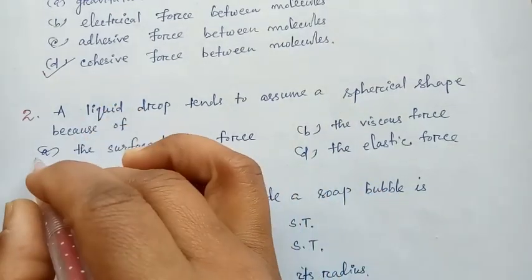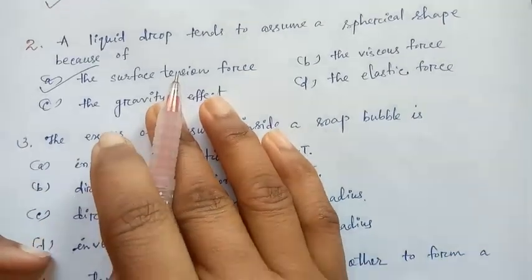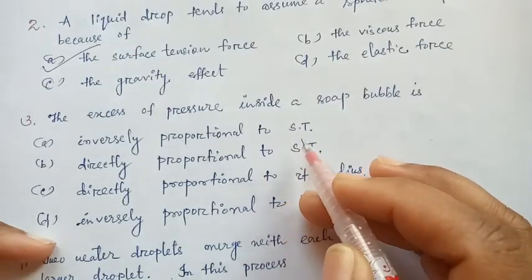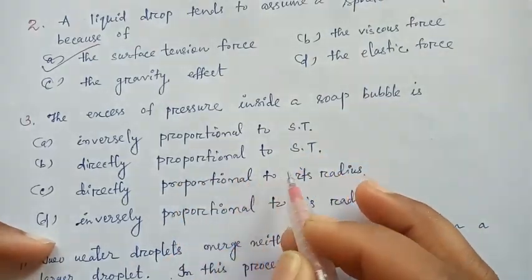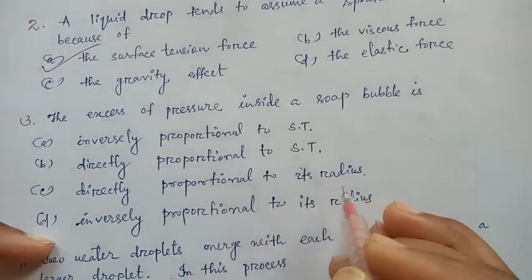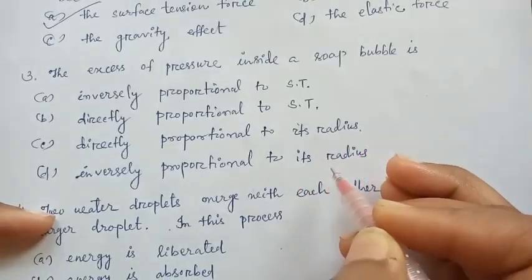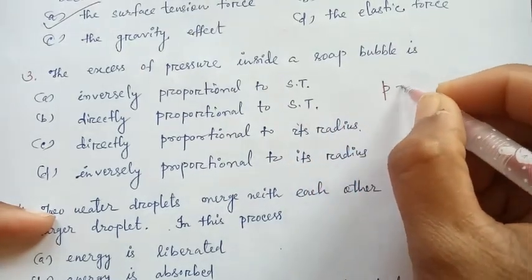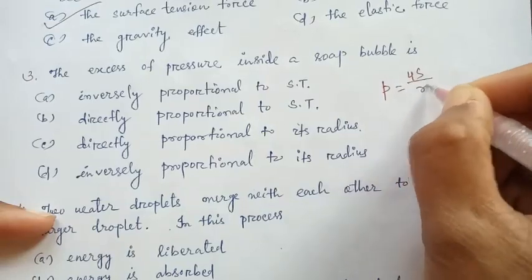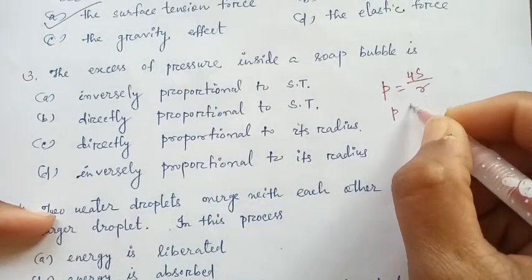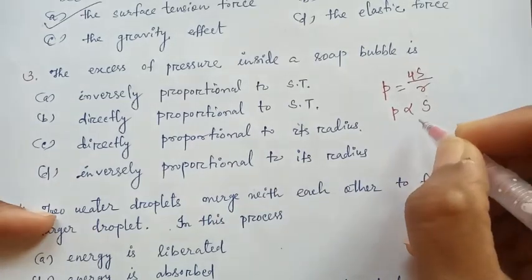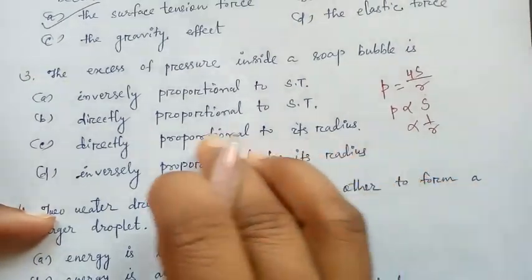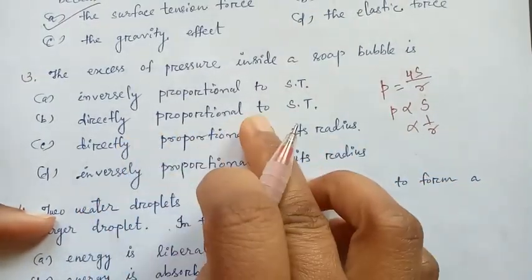The excess of pressure inside a soap bubble is: inversely proportional to surface tension, directly proportional to surface tension, directly proportional to its radius, or inversely proportional to its radius. Excess pressure inside a soap bubble is P = 4S/r. So pressure is directly proportional to surface tension and inversely proportional to radius r.